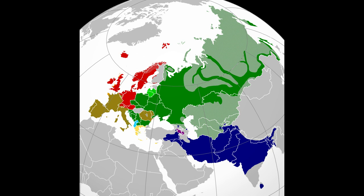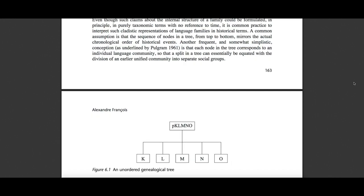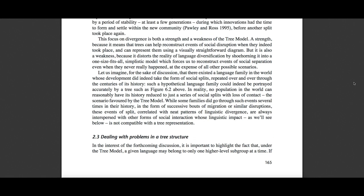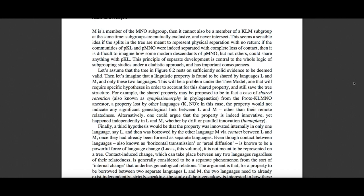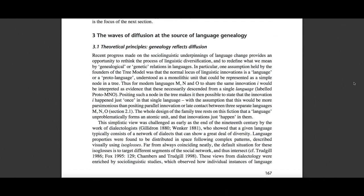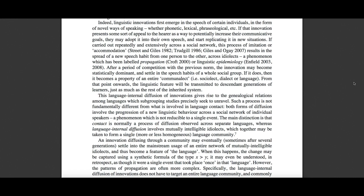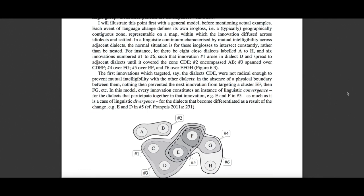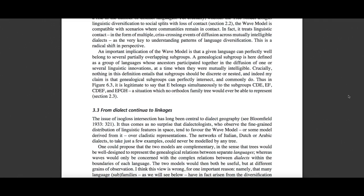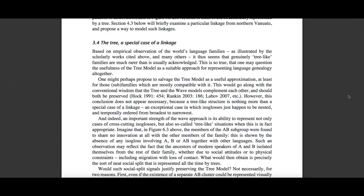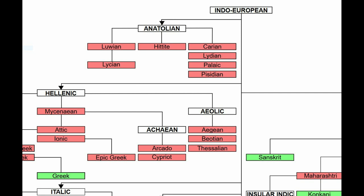Later on the paper just describes the tree model — nothing really fancy, it just gives scientific detail of how the tree model works, which every school kid basically understands. There's nothing really interesting until section 3.2, where the paper explains the wave model, or Wellentheorie. This was proposed in the 1870s. It's interesting that this structure was proposed such a long time ago and no one really constructed a family of languages based on this wave model, with the exception of oceanic languages.